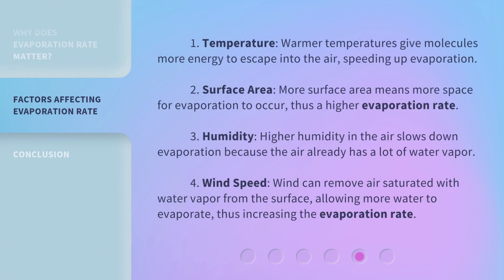1. Temperature: Warmer temperatures give molecules more energy to escape into the air, speeding up evaporation. 2. Surface area: More surface area means more space for evaporation to occur, thus a higher evaporation rate. 3. Humidity: Higher humidity in the air slows down evaporation because the air already has a lot of water vapor.